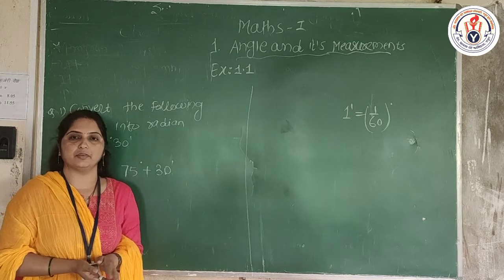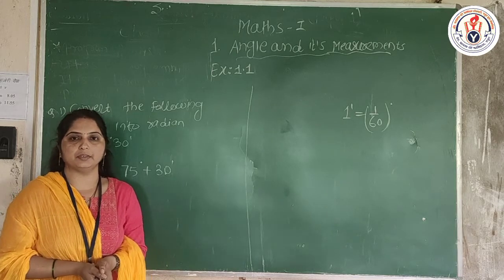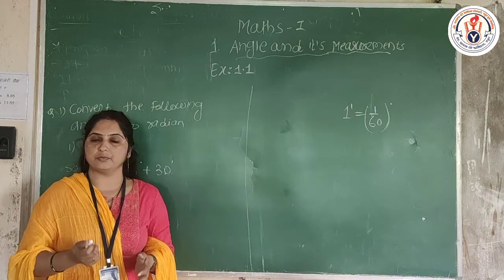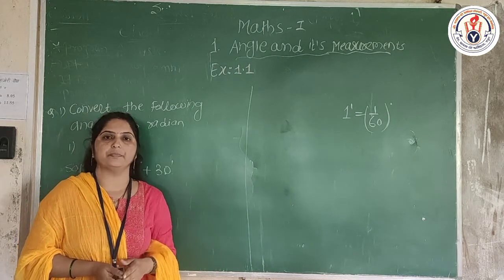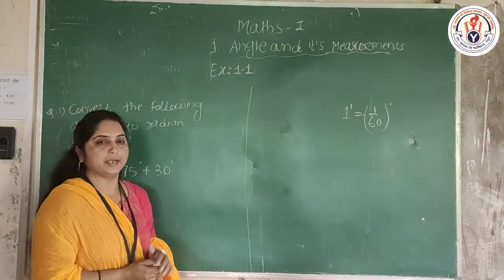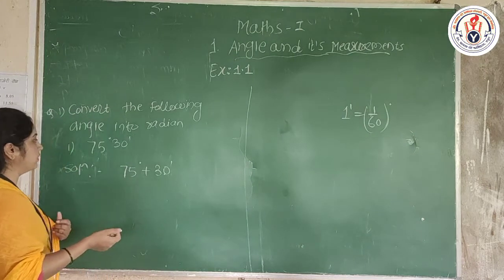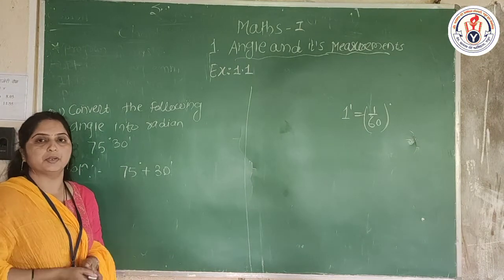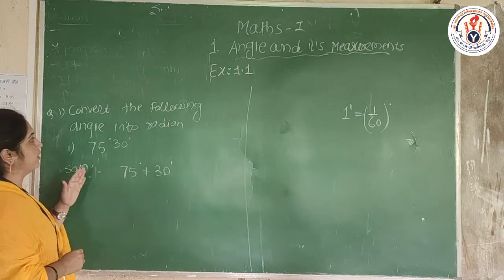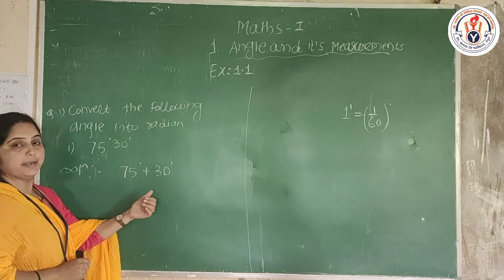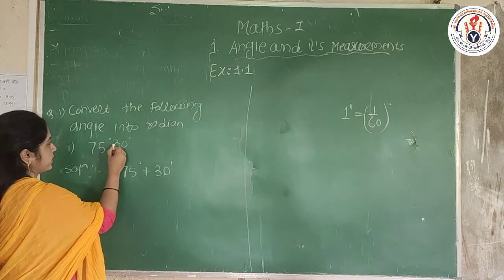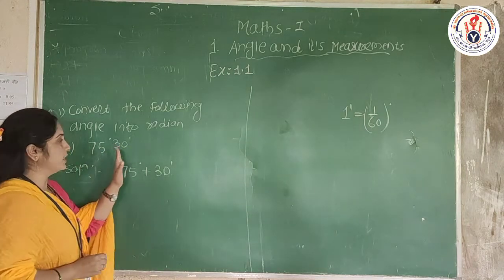Hello students and welcome back to our channel. In the previous class we started some examples from exercise 1.1. We already solved some examples on how to convert a given angle into degrees. In this example, we have been asked to convert the following angle into degrees — specifically 75 degrees 30 minutes.